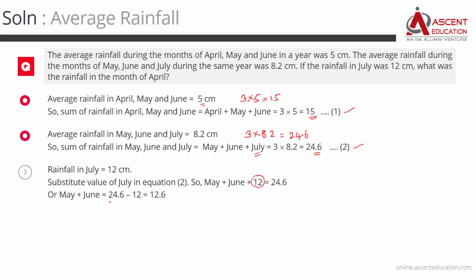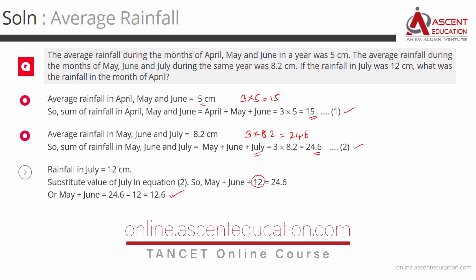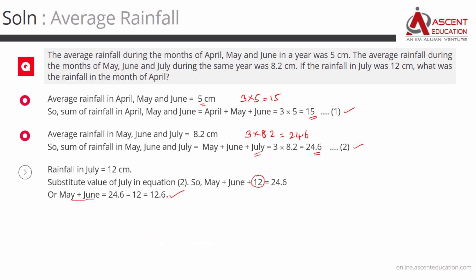May plus June rainfall is equal to 24.6 minus July's rainfall of 12, which equals 12.6. Then April plus May plus June equals 15, so April equals 15 minus 12.6, which gives us the April rainfall of 2.4 centimeters.